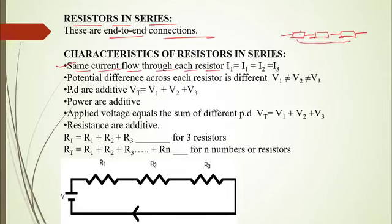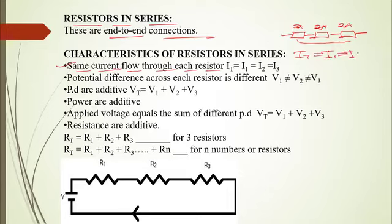For example, if a current of two amperes flows through the first resistor, the same current of two amperes flows through the second, and the same current of two amperes flows through the third. The total current is equal to the current flowing through the first resistor I1, which is equivalent to I2 through the second and I3 through the third.